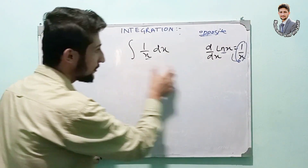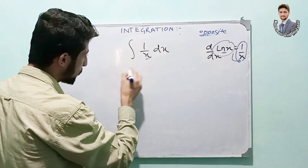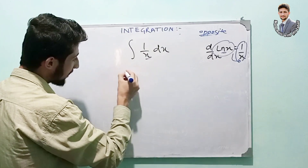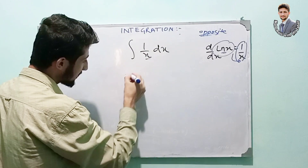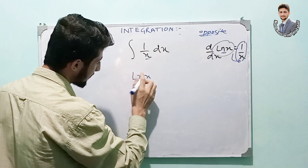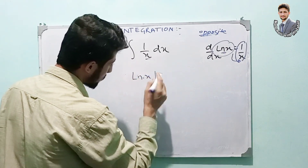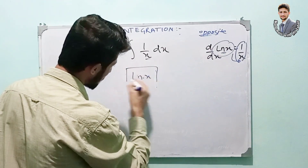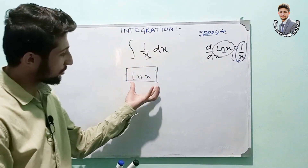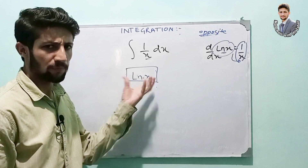So putting the value here: the integral of 1/x is ln x. After integrating, what we are getting is ln x. Integrating 1/x gives us ln x — but this is at an open interval.